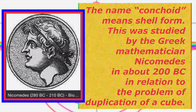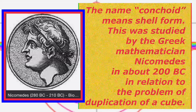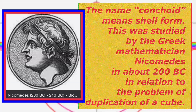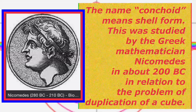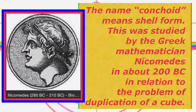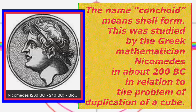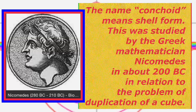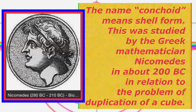The name conchoid means shell form. This was studied by the Greek mathematician Nicomedes in about 200 BC, in relation to the problem of duplication of a cube.